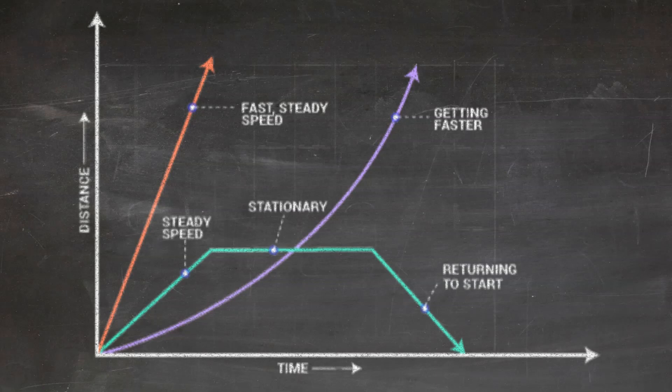And in the green line, we see that it starts with a steady speed. So the straight line pointed up at the beginning represents a constant speed moving away. Then we see that the line flattens out, which means it's stationary or the object is not moving. And then the line changes to be pointed down. It's a straight line pointed down, so we know that that means a constant speed returning to the start.